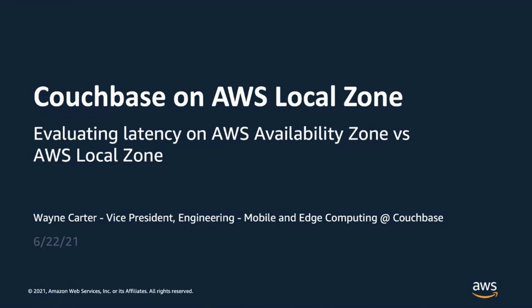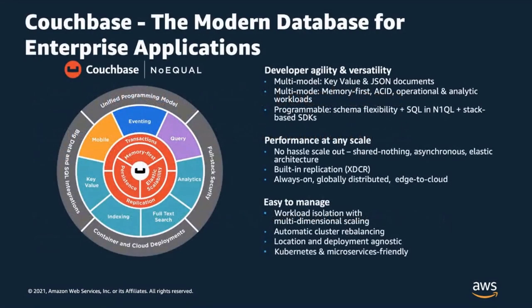Thank you. Great to be here and excited to talk about the work we're doing using Local Zones. Let me tell you a little bit about Couchbase. Couchbase is a NoSQL database company. Our database technology delivers unmatched flexibility, performance, and scale across clouds, on-premise, and at the edge. We have two database types: Couchbase Server, a highly scalable distributed database that runs in the cloud or at the near edge; and Couchbase Lite, our embedded database that runs on edge devices including phones, tablets, IoT, and embedded systems.